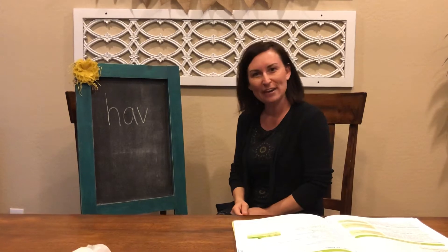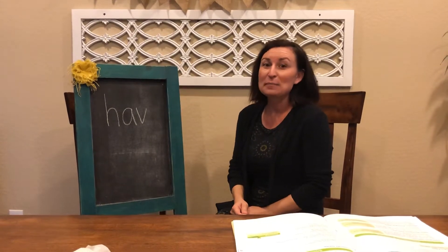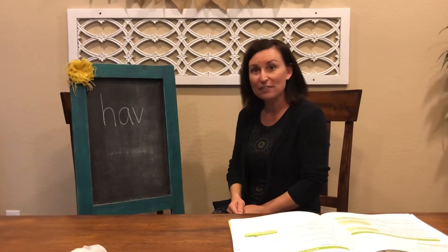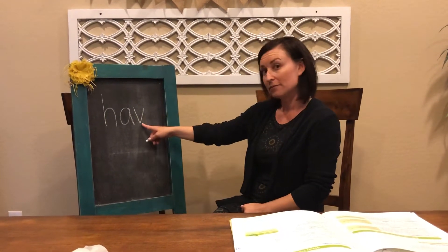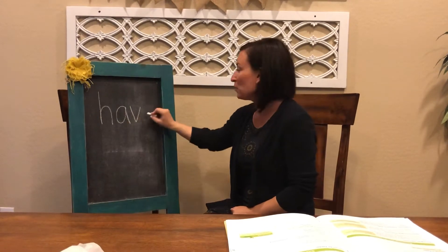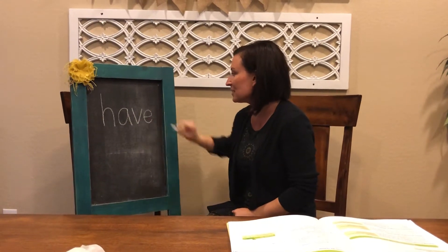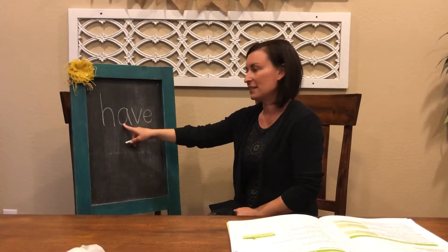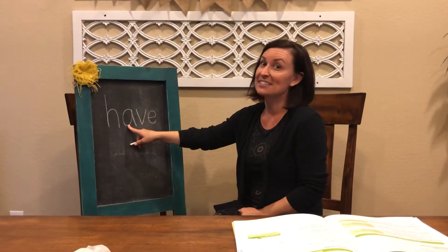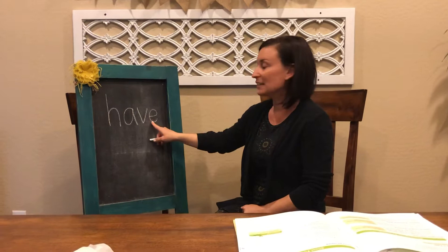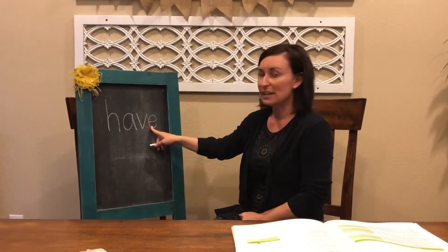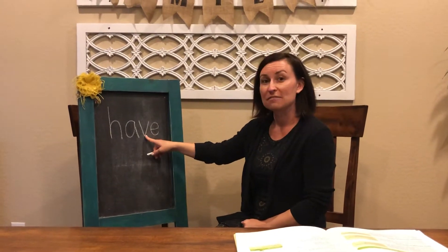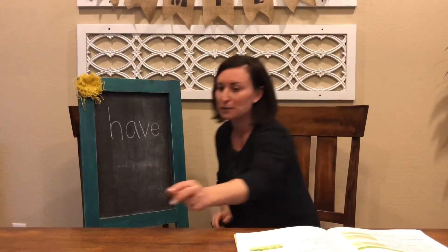Is this how you spell 'have'? No, it's not how you spell 'have' because English words never end in V. So in order for this to say 'have', we need to have a silent E. The silent E doesn't change the sound to 'have' without it — we never end our English words in V. Let's try another one.